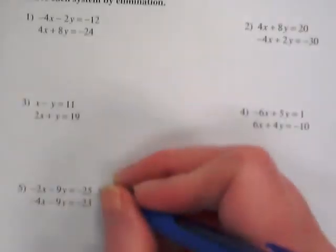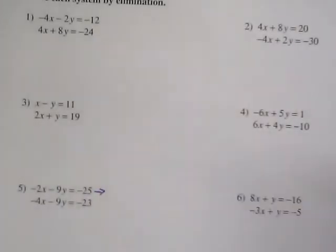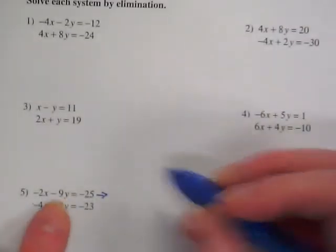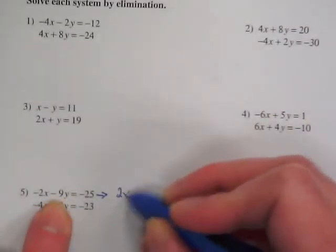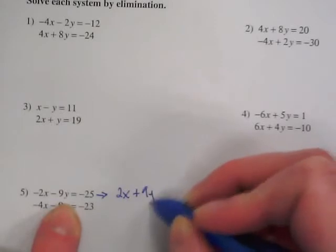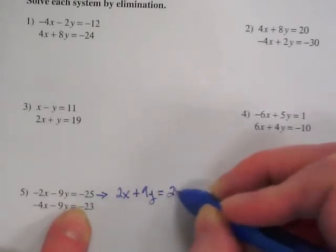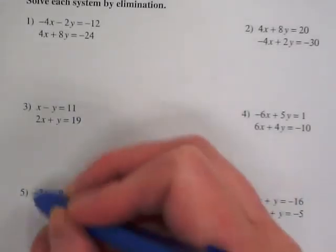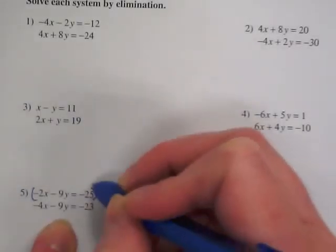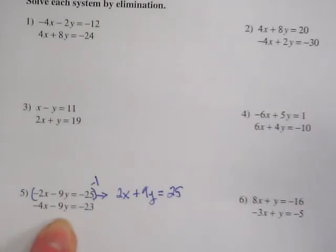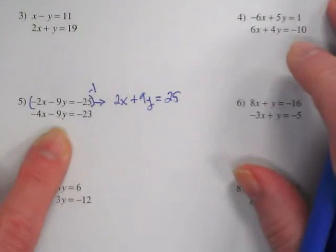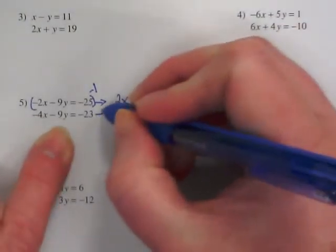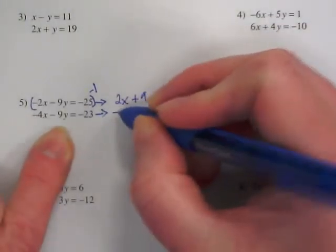I'm going to multiply this first equation by negative 1. If I multiply this first equation by negative 1, I'm going to get 2x plus 9y equals positive 25. If I multiply that whole thing, all of their terms' signs change, right? The second one, I'm going to leave it the same. But I'm going to move it over here so that they're lined up.